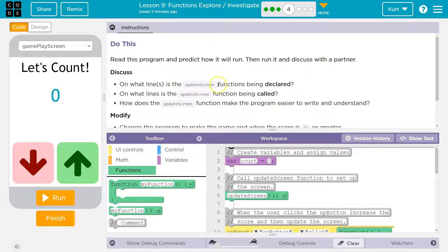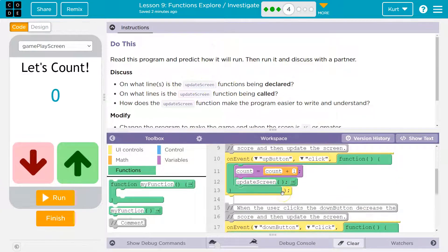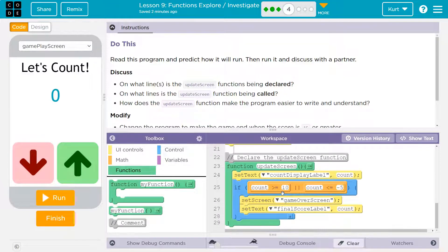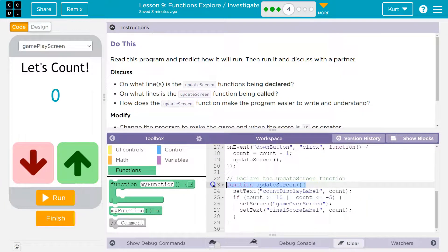On what lines is the update screen function being declared? All right, so when do we make the update screen function? Keep in mind, when we make it, it has to have the parentheses, right? When we make a function, it looks like this. If I were asking it to run, I would just have the name of it like this. That's asking it to run, but making it is declaring it. Update screen is declared right there.